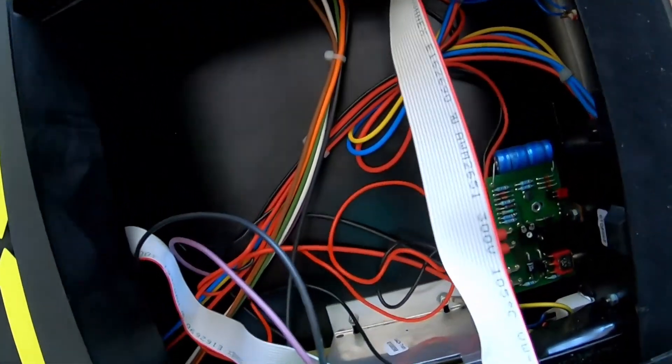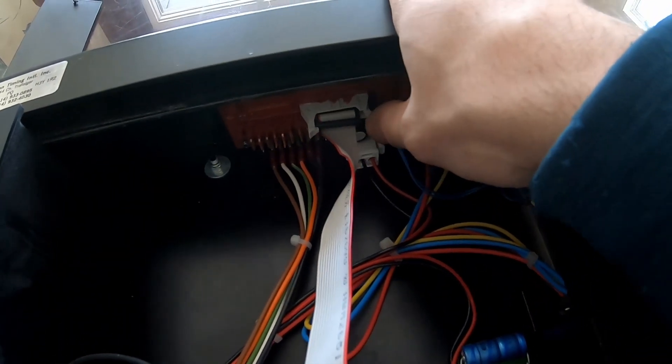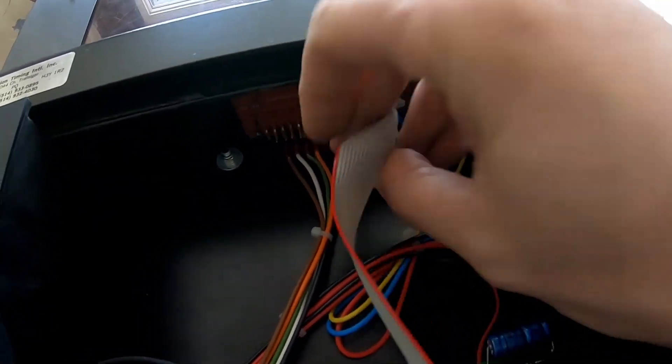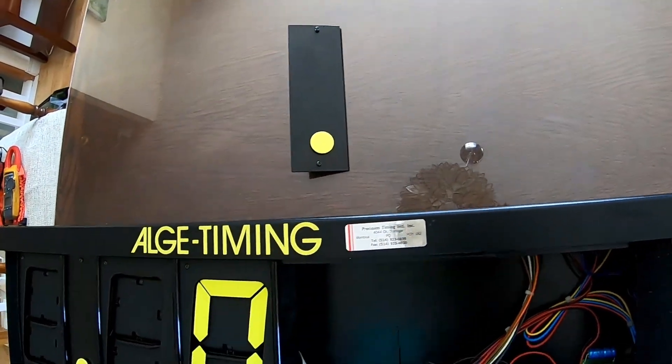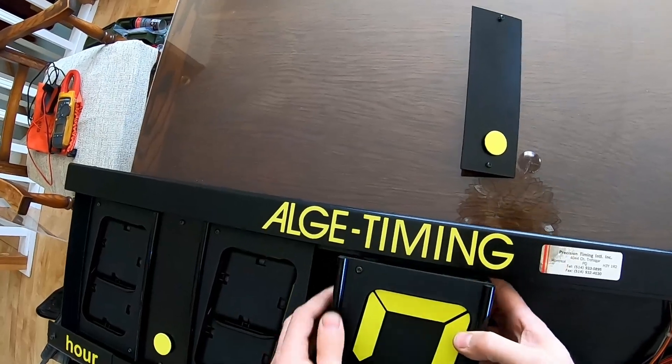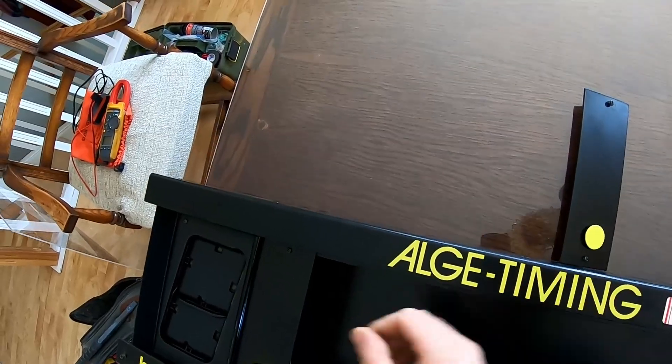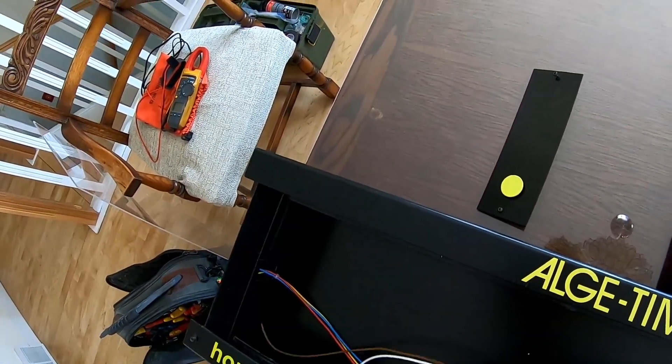So if we look here up inside the unit there's a connector with two retention tabs on it. You can pull out the retention tabs. This ribbon cable comes right off and we can take off the numbers. You gotta do them in order or else they won't come out.